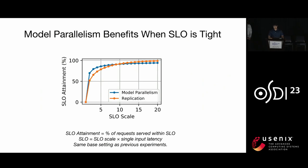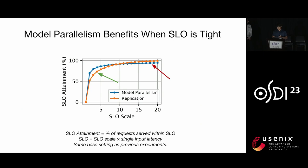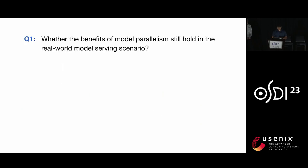In the real-world setting, it is common to have request deadlines or SLO. In this case, our goal is to maximize the percentage of requests served before the deadline — we call this metric SLO attainment in our paper. We find that when SLO is tight, model parallelism can greatly improve the SLO attainment. But when the SLO becomes looser, its performance plateaus while the baseline keeps improving, because the system becomes bounded by its total processing capability, which is affected by the model parallelism overhead.